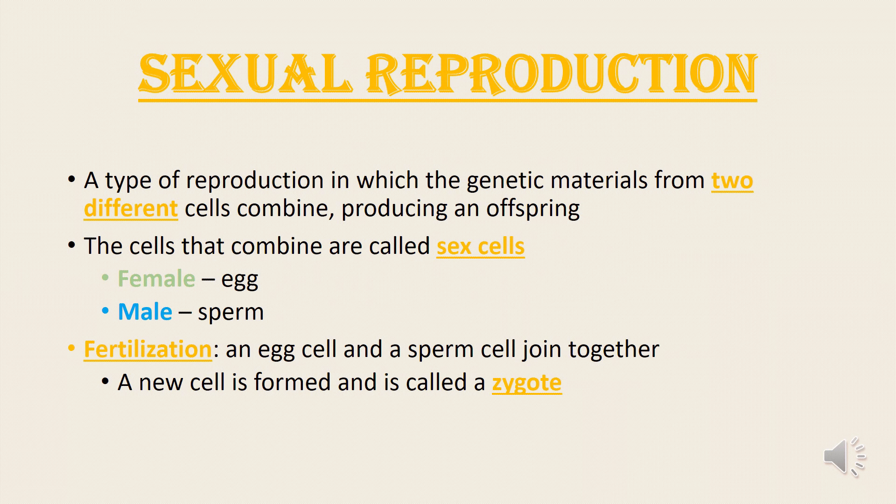Sexual reproduction is a type of reproduction in which the genetic materials from two different cells combine, producing an offspring. The cells that combine are called sex cells. For the female, it is called egg cell, and for the male, it is called sperm cell.